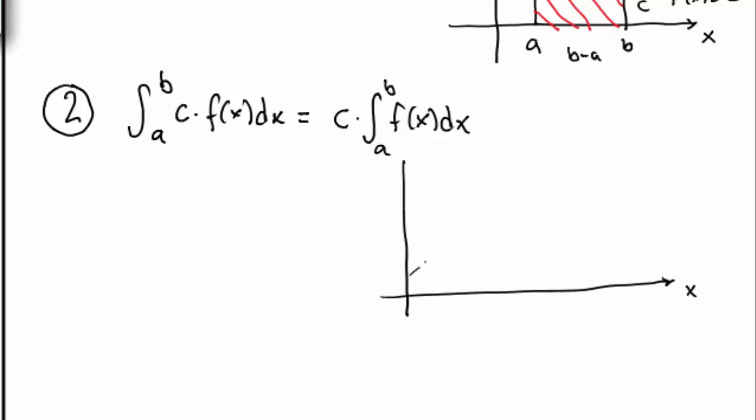Let's look at the geometric argument. I have an arbitrary function. Let's say it looks something like this. This is my f of x. Let's just say that c is equal to 2. Then what will be the graph of c times f of x?